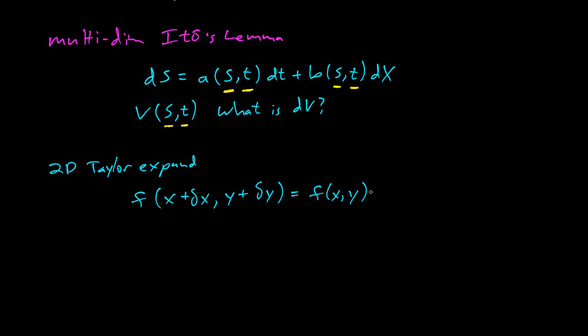A 2D Taylor expansion for some delta x and delta y is f of xy plus first order stuff. So you have the partial with respect to x, delta x, plus partial with respect to y, delta y. Then you have the second order stuff. And in this case, you get the second derivative with respect to x, and then you have a delta x squared. And you also get some mixed derivatives here.